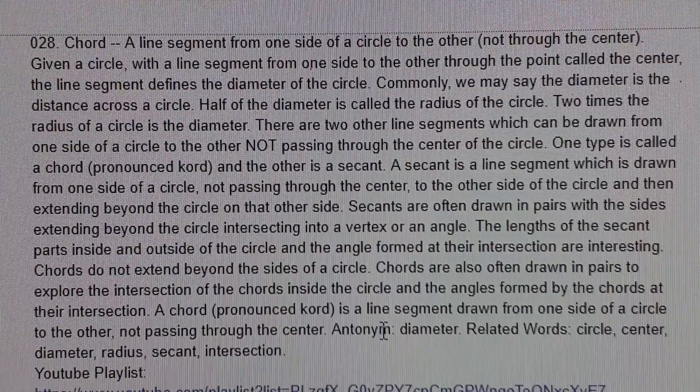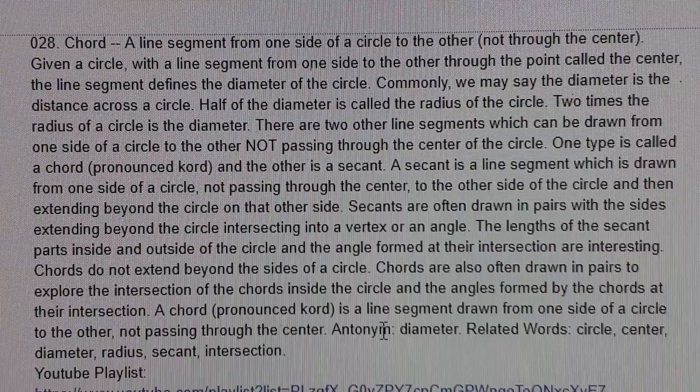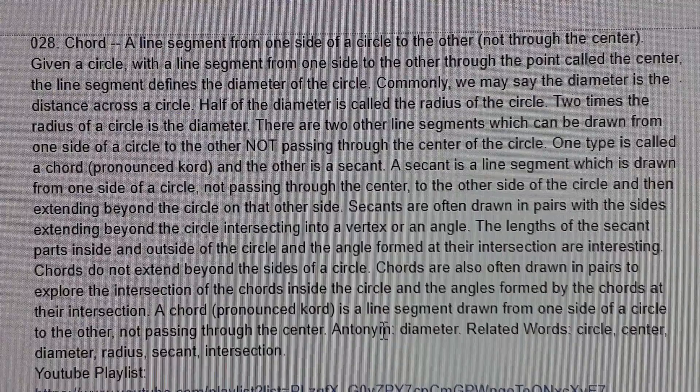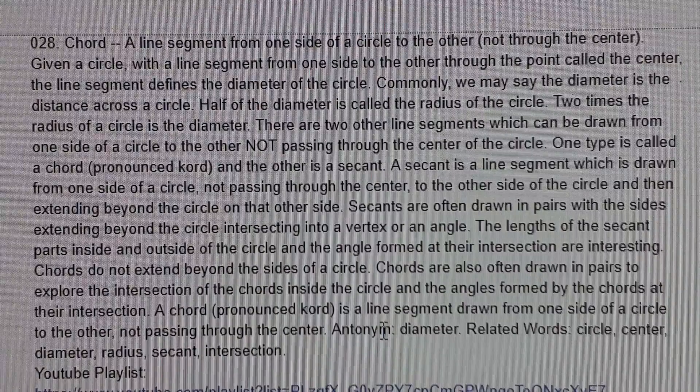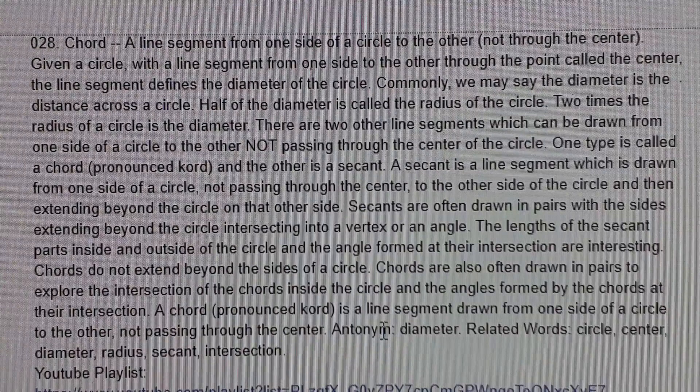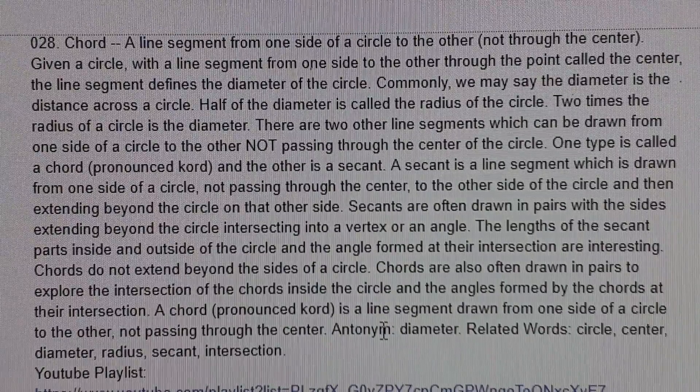Secants are often drawn in pairs, with the sides extending beyond the circle intersecting into a vertex or an angle. The lengths of the secant parts inside and outside of the circle and the angle formed at their intersection are interesting.